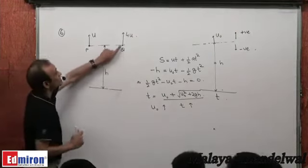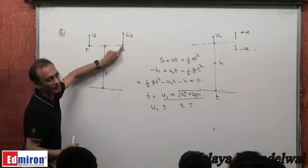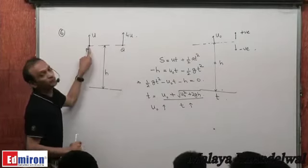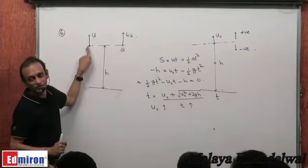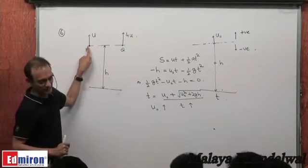So in this case Q has more upward velocity (4u) and will take more time. Therefore P, with smaller initial velocity u, will reach the ground earlier — P takes less time.